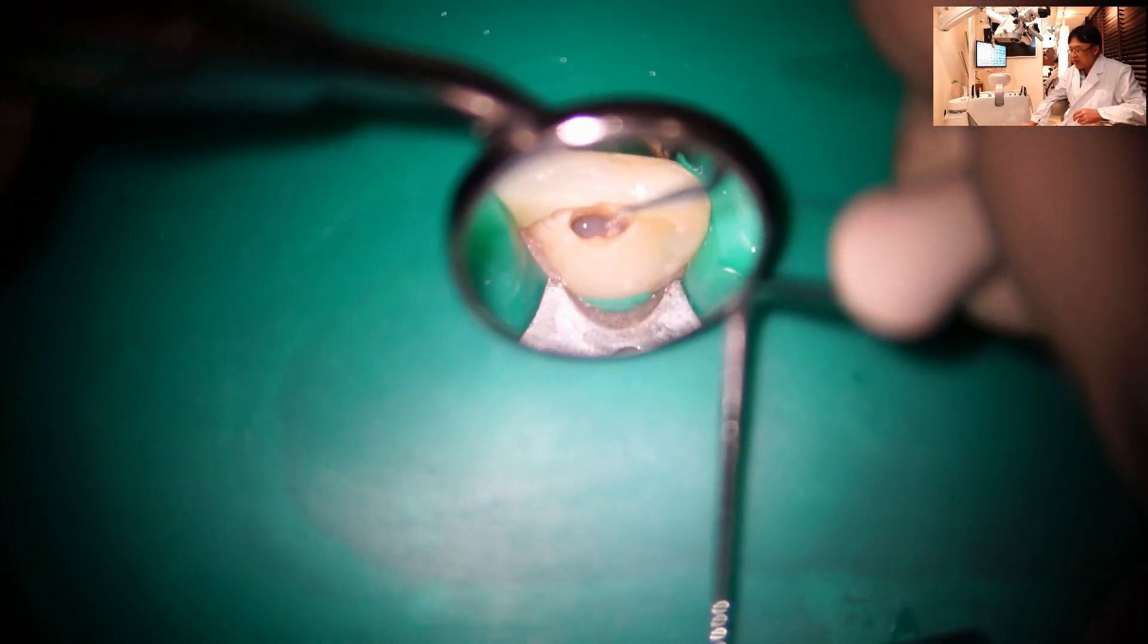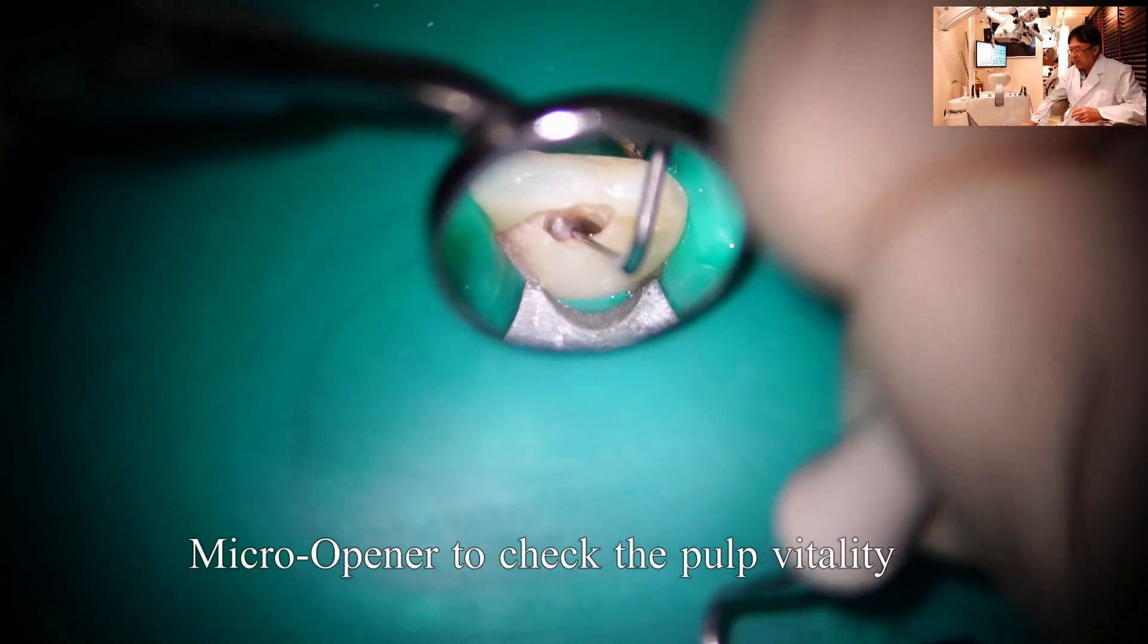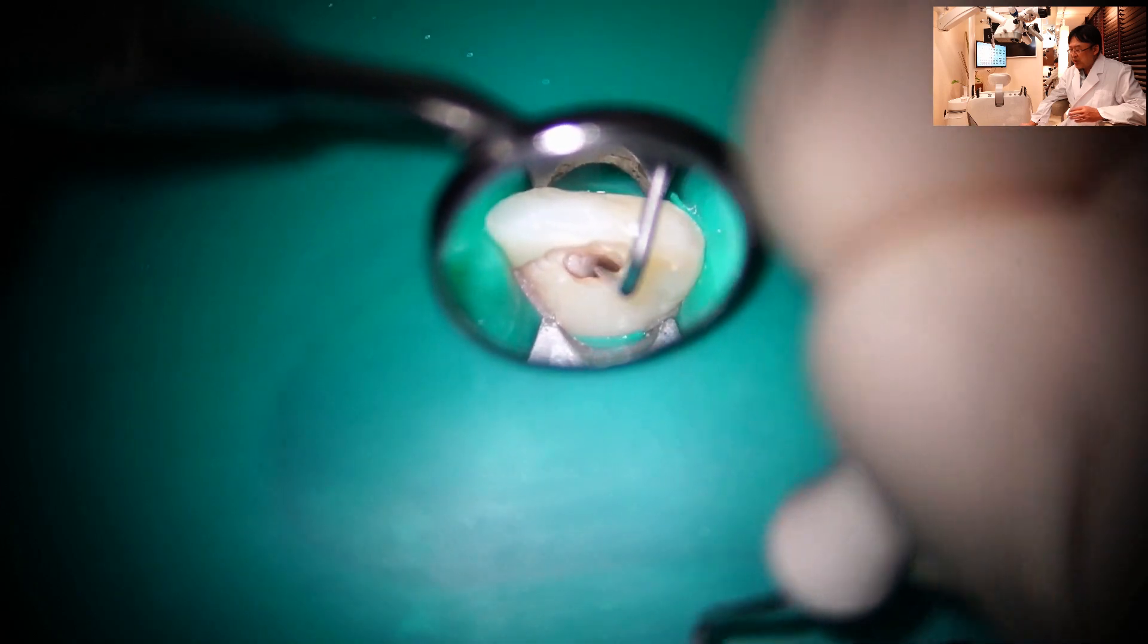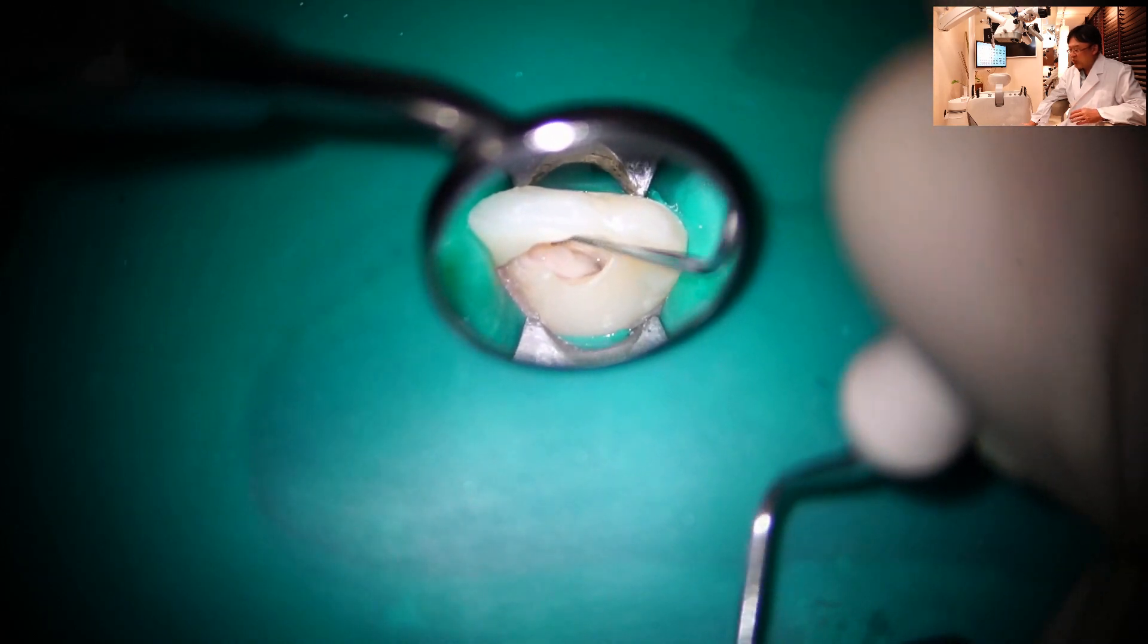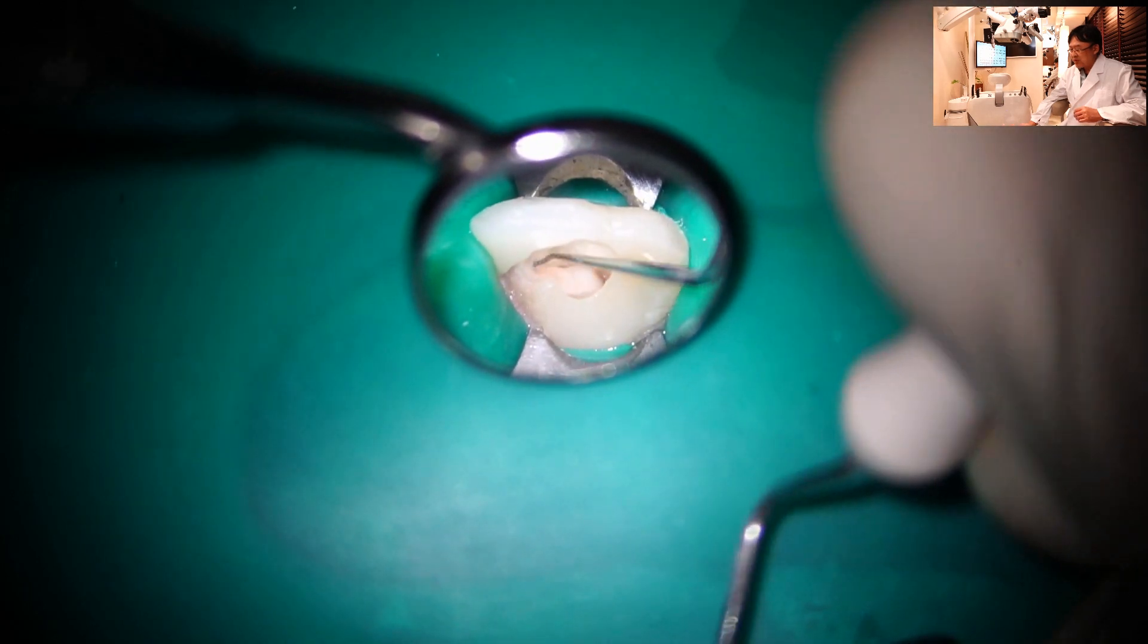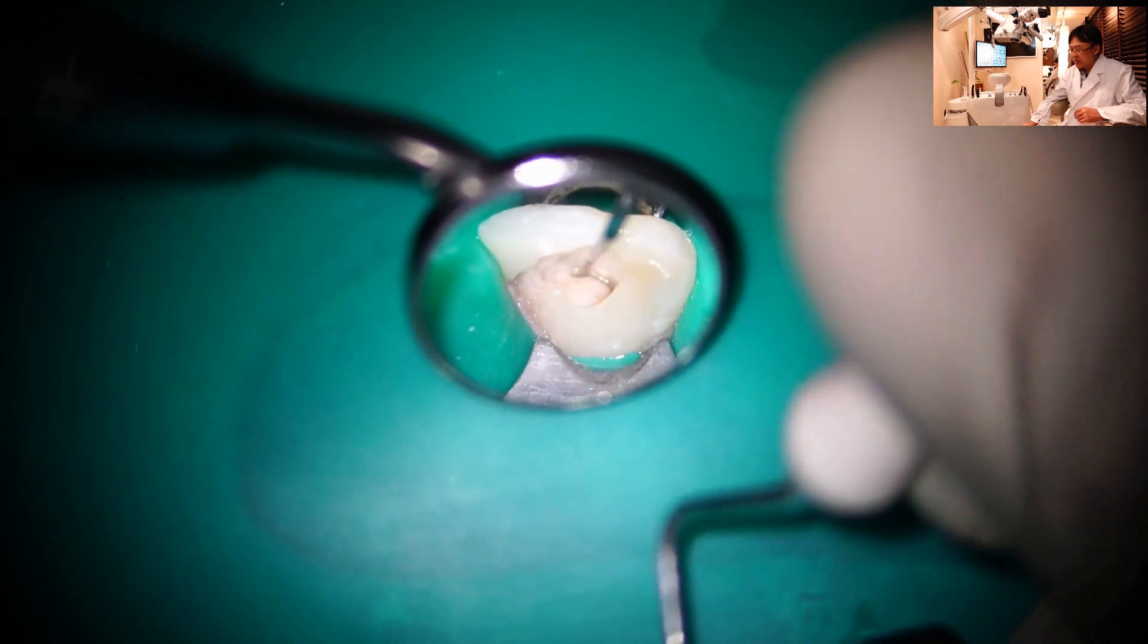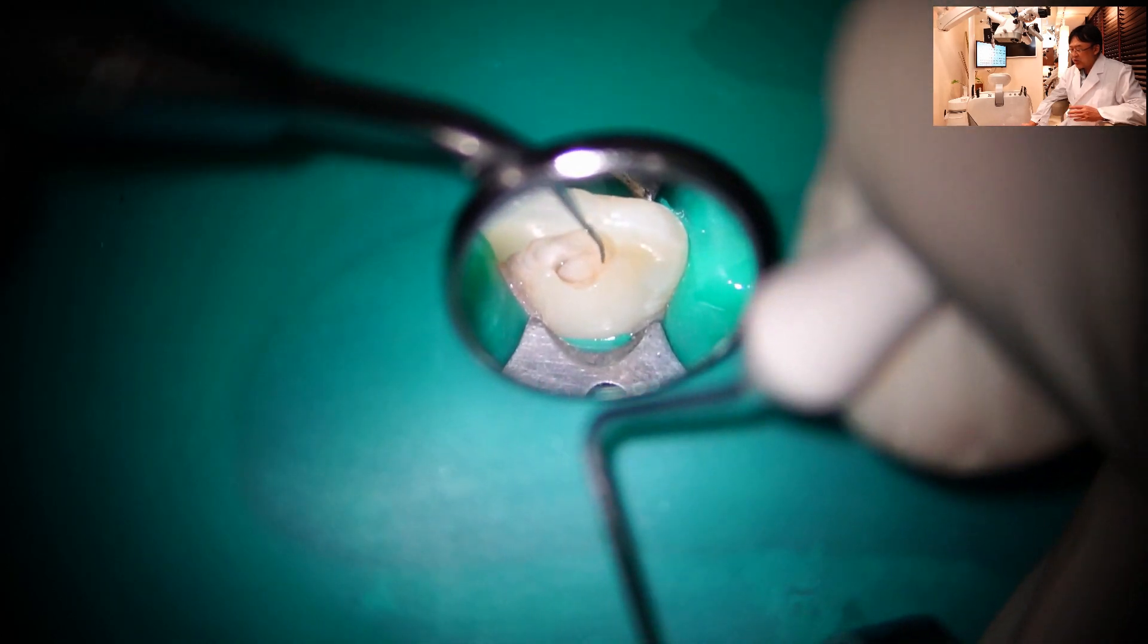Now I can see inside the tooth. There's no bleeding. So I'm checking the vitality of the tooth. It's completely necrotic. No bleeding. And the patient says there's no pain. So this means the tooth is dead.